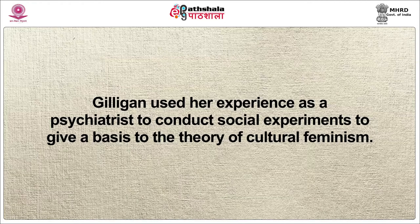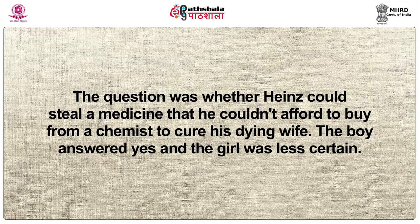Carol Gilligan's writings on the ethic of care and the ethic of rights aim to demonstrate that men and women think in different ways. She argues that men work on a system of rights typically between two individuals who are of similar status, whereas women have a system of care to understand and explain social relationships which are more complex. Gilligan used her experience as a psychiatrist to conduct social experiments to give a basis to the theory of cultural feminism. She relied on a study that asked both boys and girls a hypothetical question to highlight sociological differences between men and women's thinking, and how men and women engage differently with both social relationships and the legal system. The question was whether Heinz could steal a medicine that he couldn't afford to buy from a chemist to cure his dying wife.